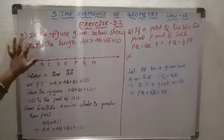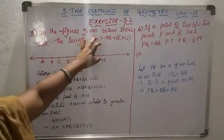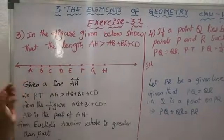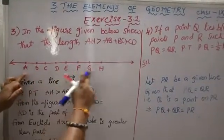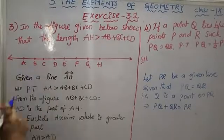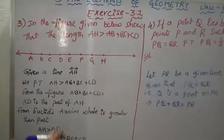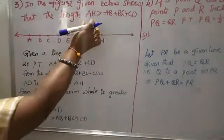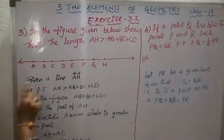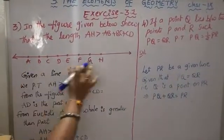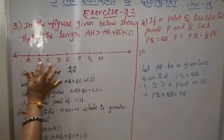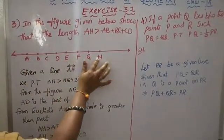Third question: from the figure given below, show that the length AH is greater than AB plus BC plus CD. We have to prove that AH is always greater than AB plus BC plus CD. In the straight line, there are 8 points: A, B, C, D, E, F, G, H.